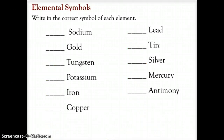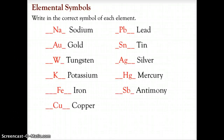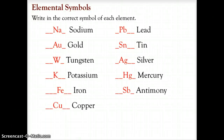On the second part of the handout, where we dealt with names and symbols that are a little bit different due to Latin origins: sodium — capital N, lowercase a; gold — capital A, lowercase u; tungsten — W; potassium — K; iron — capital F, lowercase e; copper — capital C, lowercase u; lead — capital P, lowercase b; tin — capital S, lowercase n; silver — capital A, lowercase g; mercury — capital H, lowercase g; and antimony — capital S, lowercase b.